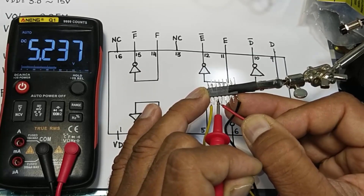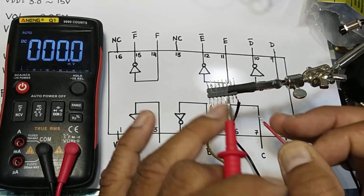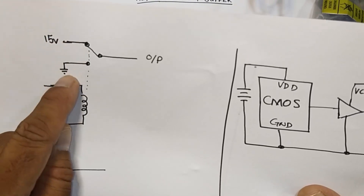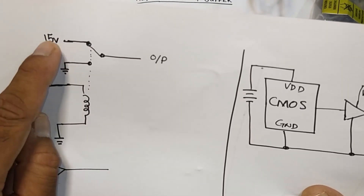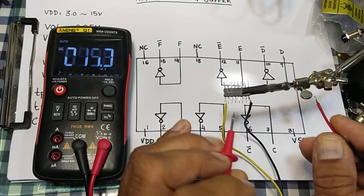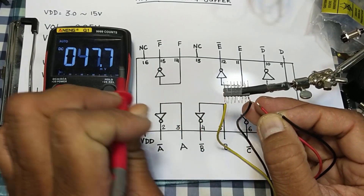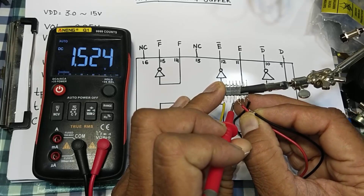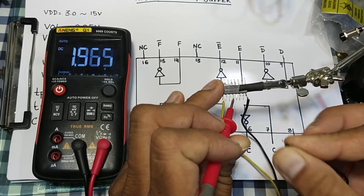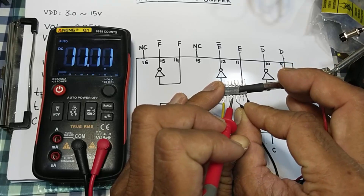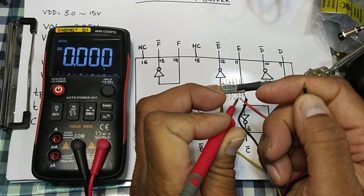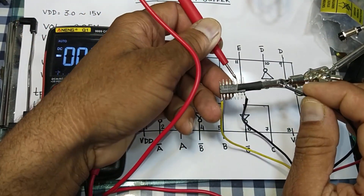When input is high at 5.23 volts, the output is low. As discussed: when input is connected, it gives low output; when input is ground, the output is high. All sections are working like this. Now we check the second section, pins 4 and 5: pin 4 shows 0 volts, 47 millivolts. When I connect positive voltage it gives low; when I connect ground it gives 11 volts output — confirming high/low behavior. Pin number 10 is output — high, low.